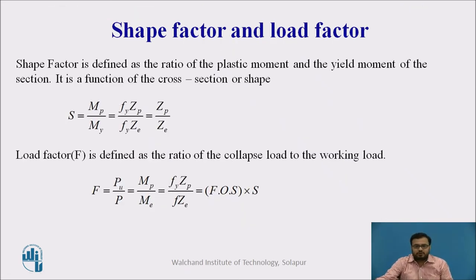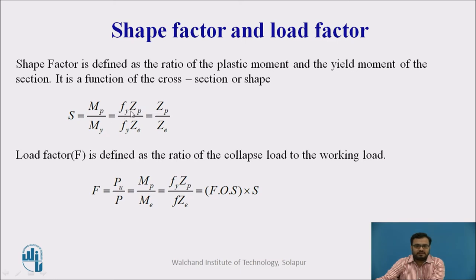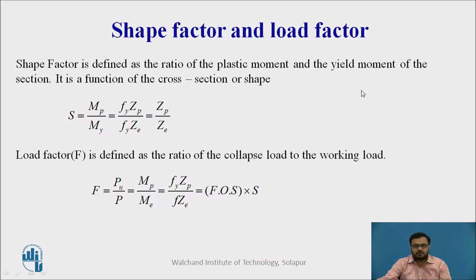Before starting plastic analysis, we will see a few terms. The first one is shape factor. It is defined as the ratio of plastic moment to yield moment, and it is a function of the cross section. Shape factor = Mp / My = (Fy × Zp) / (Fy × Ze) = Zp / Ze, where Zp is the plastic section modulus and Ze is the elastic section modulus.